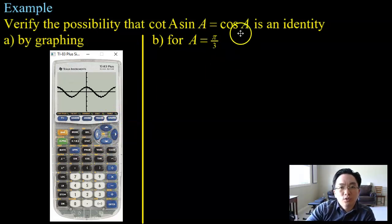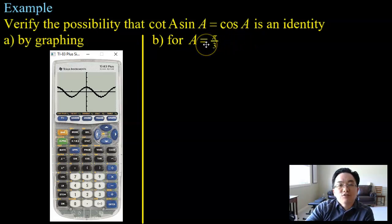So the graph of cosine x graphed right on top of the graph of cotangent A sine A, or cotangent x sine x. So we are reasonably convinced that this is an identity, right? Because an identity is basically an equation that is valid for all values of x, where the identity is defined. And if it graphs right on top, obviously they're the same. So we believe it's an identity from graphing.